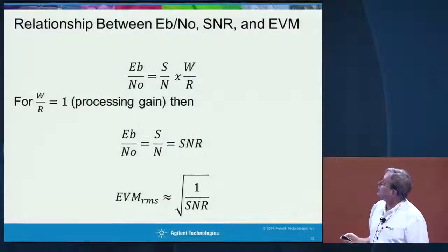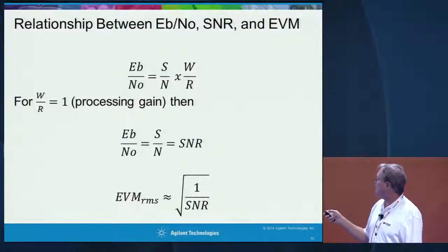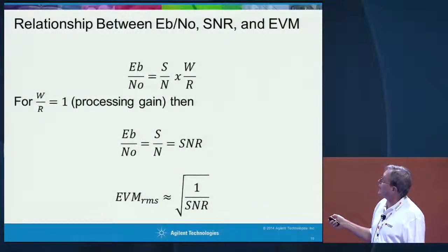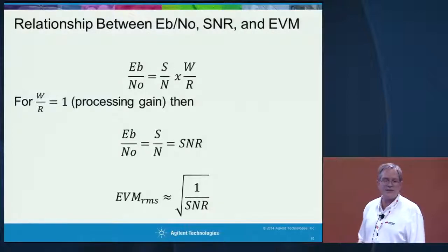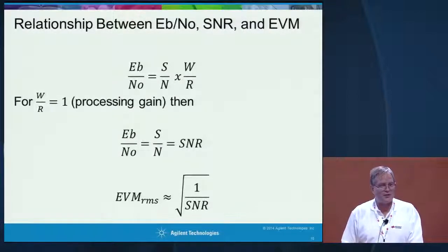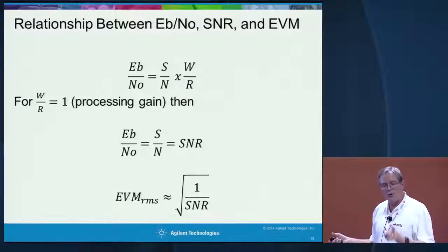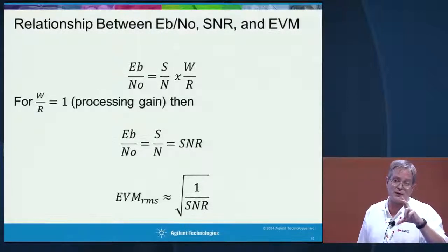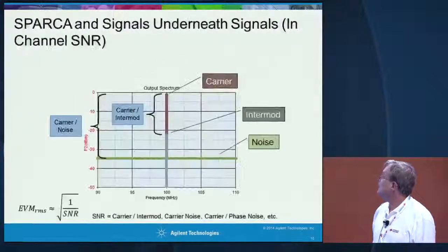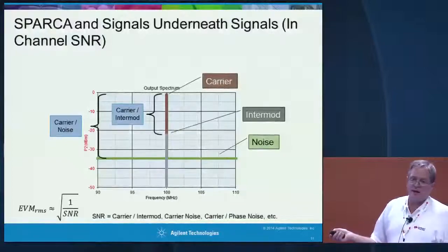Before going into that, I want to talk about the relationship between Eb/N0 and signal-to-noise ratio. Here's the general equation: W is the bandwidth, R is the data rate. In the case where the processing gain is 1, Eb/N0 really equals the in-channel signal-to-noise ratio. There are other published papers on this, but EVM is approximated as 1 over the signal-to-noise ratio, where that SNR is in-channel — which is what we see in our RF system tool.